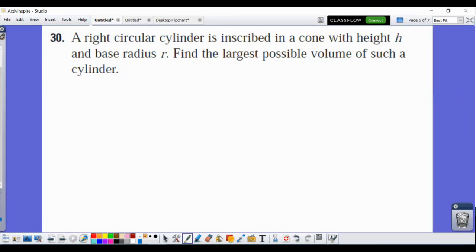Alright, so this is number 30 from the optimization section, 4-7 in the Stuart book. We're trying to find the largest possible volume of a cylinder inscribed in a right circular cone.